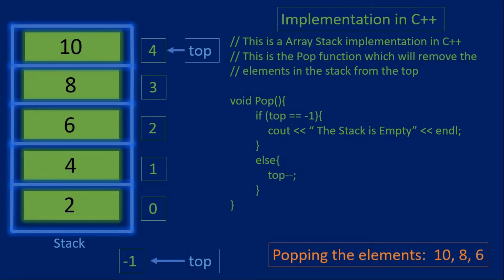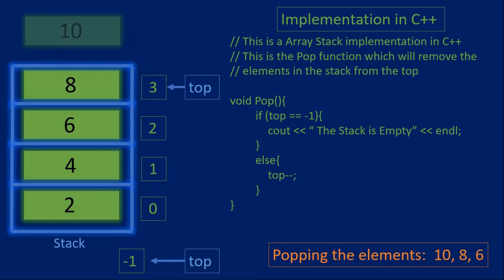With the pop function, this function will remove the element at the top of the stack. So with our example stack, let's apply the pop function. When we call the pop function on the stack, it will check if top is equal to negative one, meaning the stack is empty. But top is equal to four, so we go to the else statement and we just decrement the top value. Now the top will be equal to three, with the element ten removed from the stack.